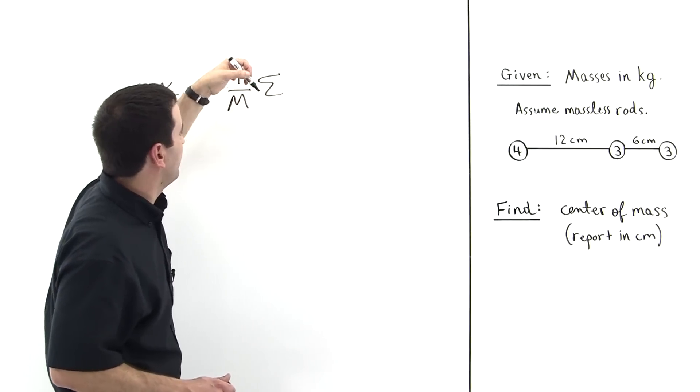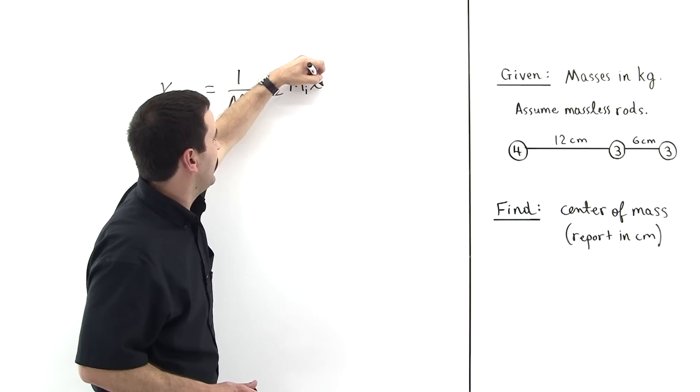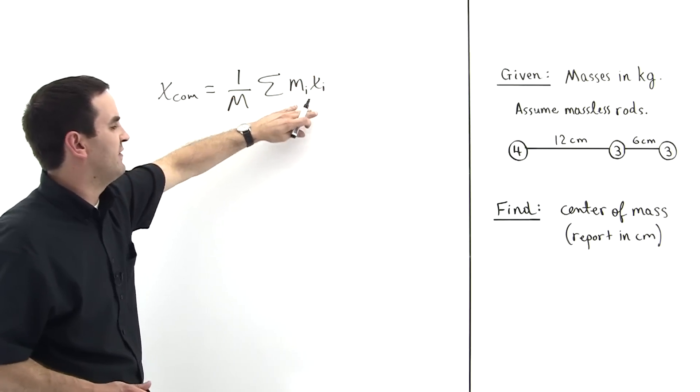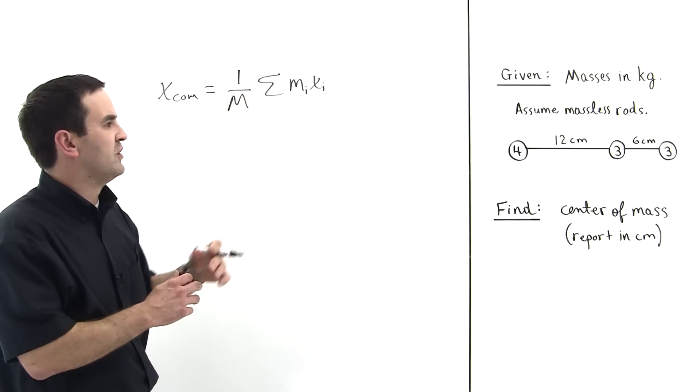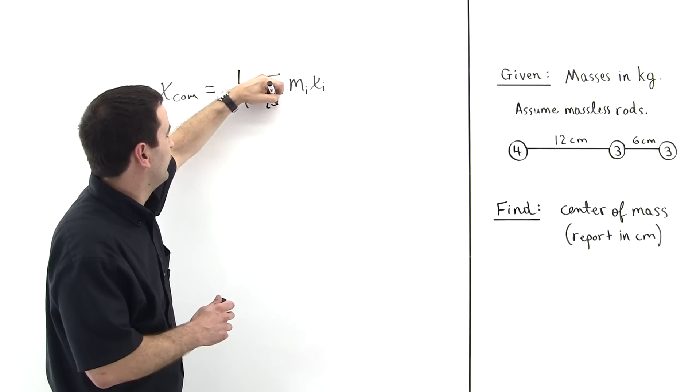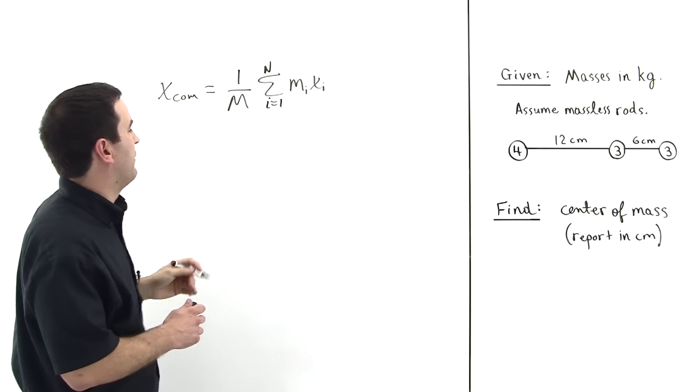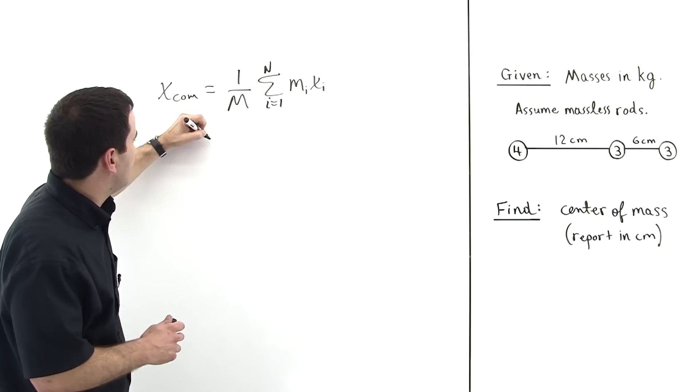times the sum of the mass mi times xi, that is the sum of each of the masses times their respective position away from the origin that we'll choose in a moment. And from i equals one to however many particles there are is n. In this case, there are three particles.